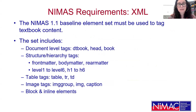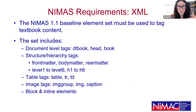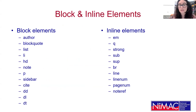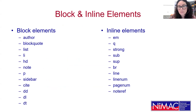The NIMAS 1.1 baseline element set must be used to tag the textbook content. This set includes document-level tags like DTBook, head tag, and book tag, as well as structuring and hierarchy tags. You have levels and headers one through six, front matter, body matter, and rear matter sections, as well as table tags, image tags, and block and inline elements. Those block and inline elements might be a block quote, a list, a list item, a sidebar, glossary tags. Inline elements might be emphasis, bold, line breaks, and page numbers.